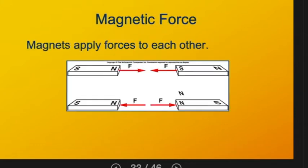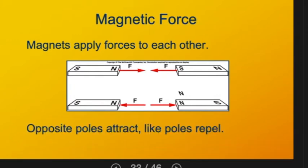You're probably aware that magnets apply forces to each other. In fact, you've seen that opposites attract and likes repel with magnets. We have north and south poles of a magnet: north repels north, south repels south, and north and south attract.